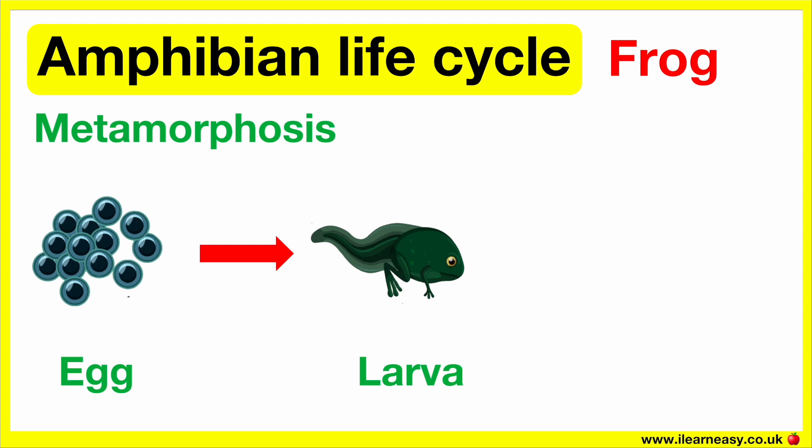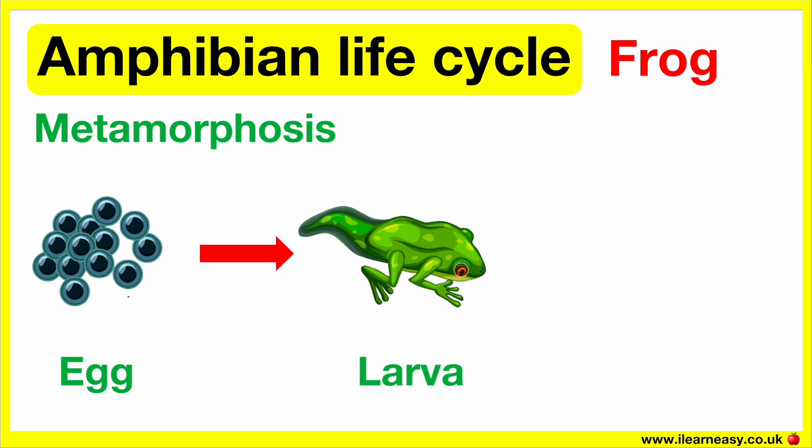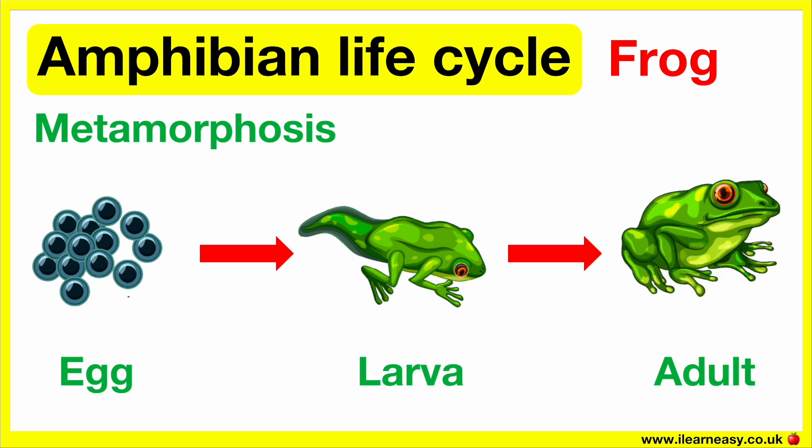Alongside this, the tadpole's lungs begin to grow, because frogs need lungs to breathe on land. Its tail shrinks away and the baby frog emerges from out of the water. The baby frog is known as a froglet. The froglet continues to grow into an adult frog, which can then lay its own eggs to repeat this cycle.